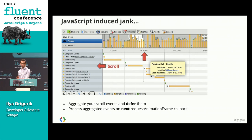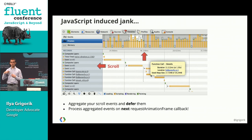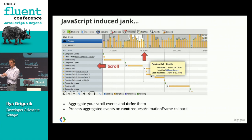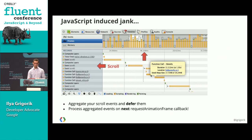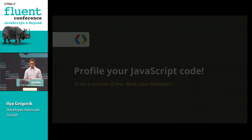A simple fix: use the requestAnimationFrame callback, which calls your function every time a new frame starts. Register scroll events, put them in a queue, and when the RAF callback fires, handle the outstanding items and defer remaining work to the next frame. Similarly, if you have a long-running function, maybe split it — do part of the work, yield control so the browser can update the screen, and then continue. It requires more work on your part, but rendering performance definitely matters.